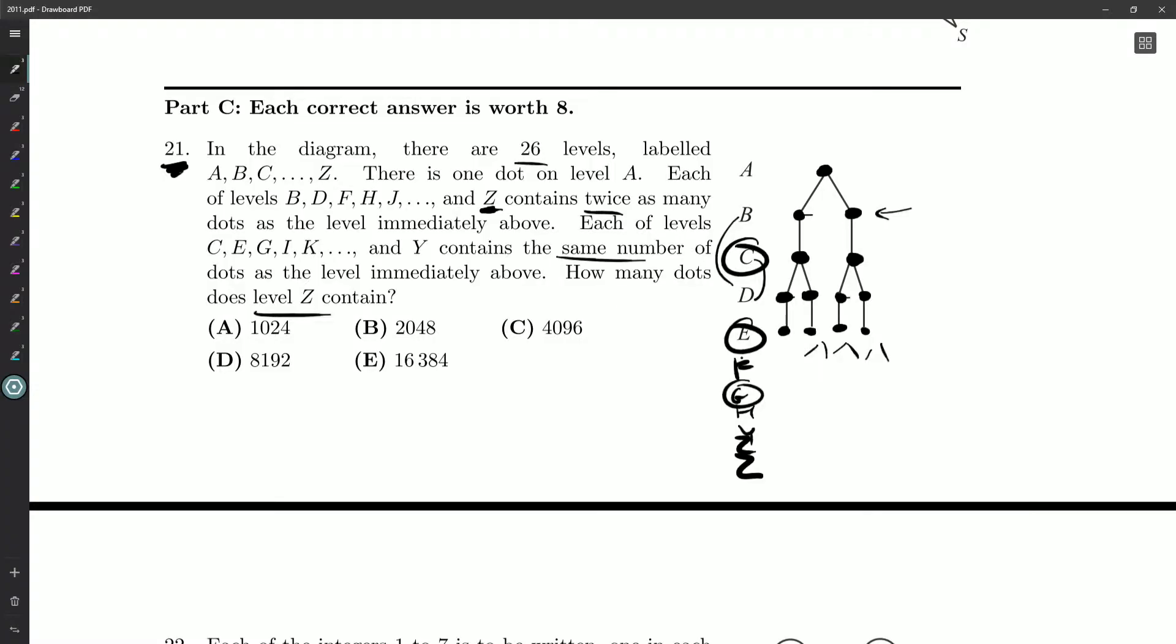Now, the levels C, E, G, nothing really happens there. But we do know that on B, D, F, and all the way up, we're going to be doubling. So how many times do we double? How many of those layers are there? We just want to sort of count those.